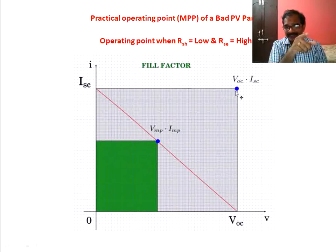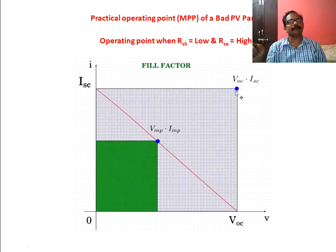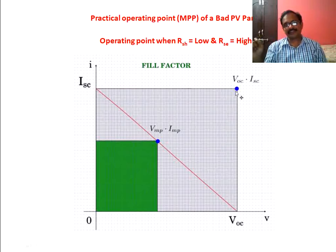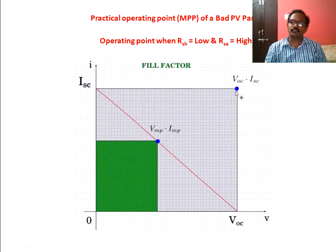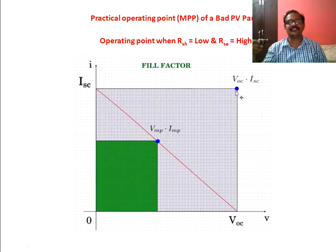The practical operating point of a worst or bad solar panel shows that RSH should be as high as possible and RSE should be as low as possible. Ideally RSH should be infinity and RSE should be zero, but practically that is never possible. RSH value should be as high as possible and RSE as low as possible. The nominal values discussed previously: RSH is in the range of 200 to 300 ohms, whereas RSE is in the range of 0.2 to 0.4 ohms.